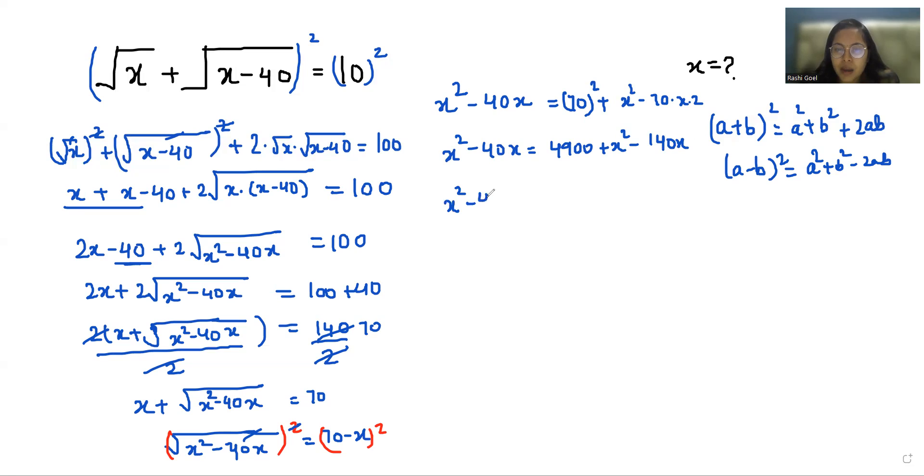So x square minus 40x, take this positive x square negative and take this 140x to other side positive. You can cancel out x square, and this gives us 100x equals 4900. Divide both sides by 100. So the value of x is 49.